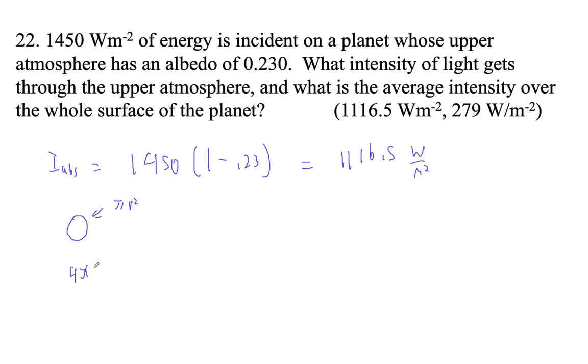So we're going to take the 1116.5, multiply by pi r squared, divide by—so that's, this is what we receive is frontally the pi r squared, but the earth has an overall area of 4 pi r squared. So notice that the net effect here is that we just divide by 4.